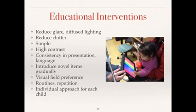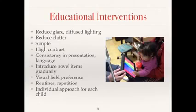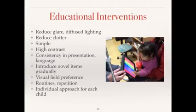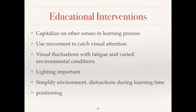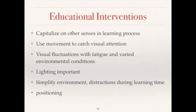In regards to educational and environmental interventions, there is an individual approach for each child. The child may benefit from reduced glare, diffuse lighting, reduced clutter, simplification of the environment, higher contrast, consistency in presentation and language, introduction of new items gradually, using an initial visual field preference, and using routines and repetition. We need to capitalize on other senses in the learning process. Movement sometimes can help catch visual attention. Visual fluctuations may occur with fatigue and in varied environmental conditions. Lighting is important, and simplifying the environment and distractions during learning time with proper positioning is important.